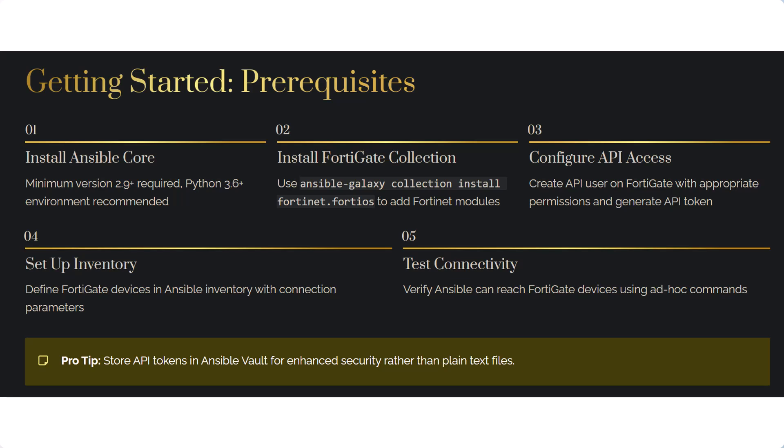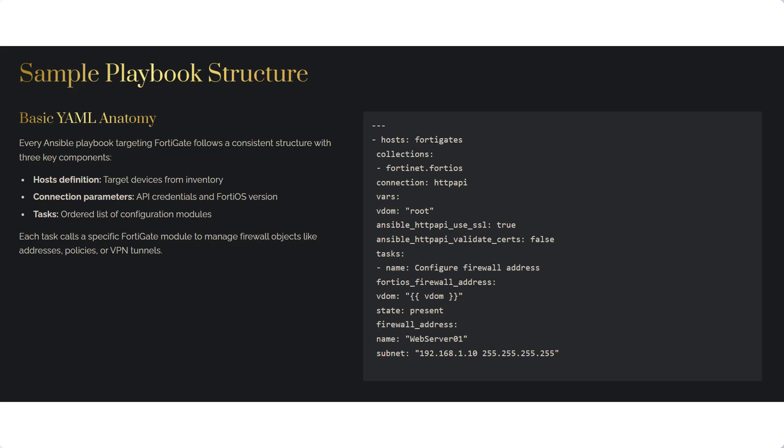Always keep API tokens secure — ideally using Ansible Vault for this purpose. Looking at a sample playbook, it's a basic structure where we define our hosts and connection, set parameters, and then list our tasks. For example, we can create an address object with just a few lines of YAML.